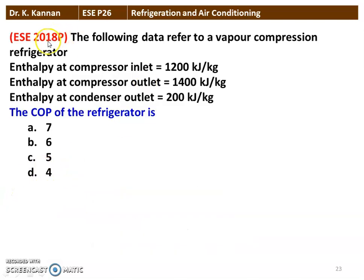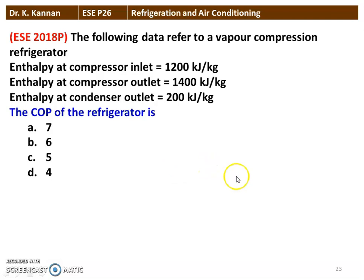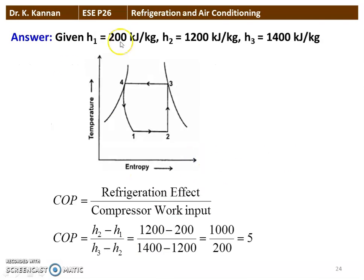The next question is from the 2018 question paper. The following data refers to a vapor compression refrigerator: enthalpy at the compressor inlet is 1200 kJ/kg, enthalpy at the compressor outlet is 1400 kJ/kg, and enthalpy at the condenser outlet is 200 kJ/kg. The COP of the refrigerator is 5.